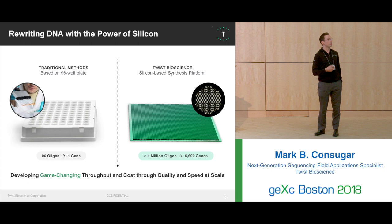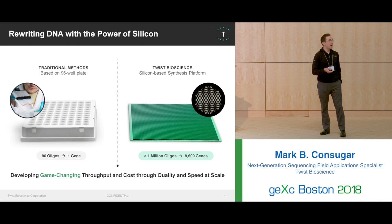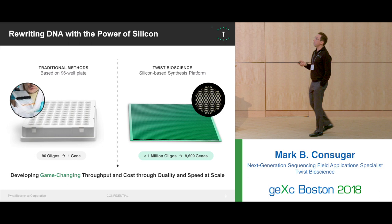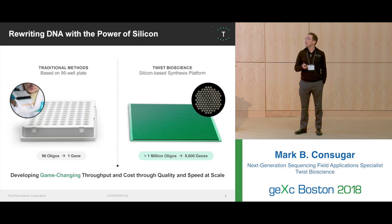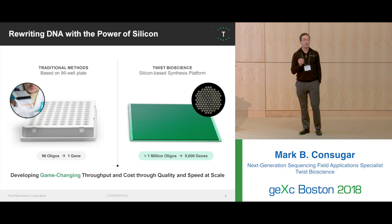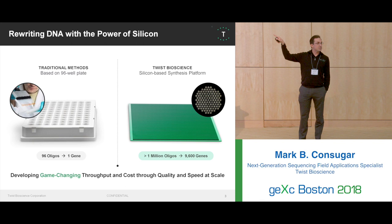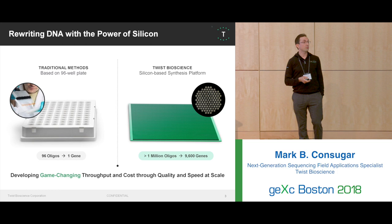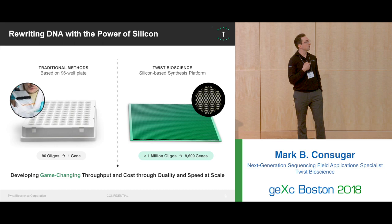Twist, on the other hand, uses a silicon wafer with approximately the same footprint as a 96-well plate. On this wafer, we have approximately 8,000 little wells, and in those wells there are 121 individual slots or indices where we can synthesize an oligo. This means we can generate over a million oligos in 36 hours — massive scaling that enables different types of technology, including target enrichment.